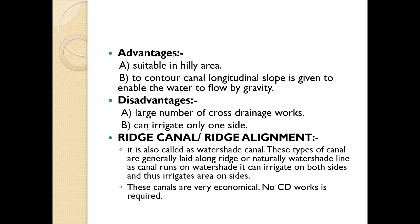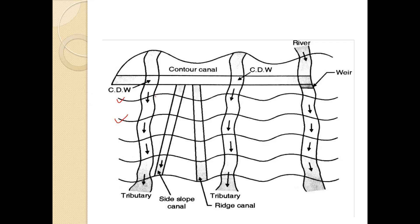The second type is ridge canal, also called watershed canal. This type of canal is generally laid along the ridge or natural watershed line. As the canal runs on the watershed, it can irrigate both sides of the canal. These canals are very economical. No cross drain works are required, as all other flows are flowing away from the ridge, and the canal can irrigate both sides.